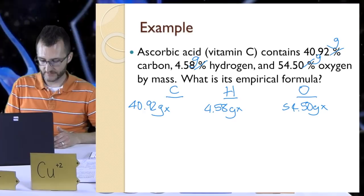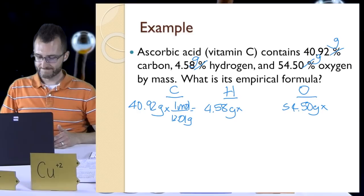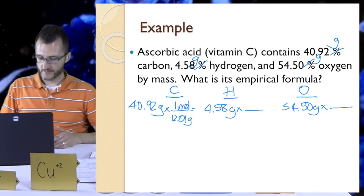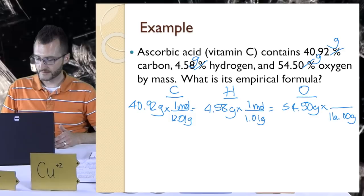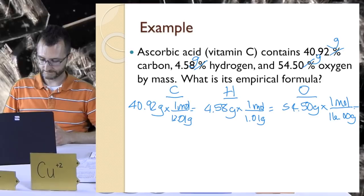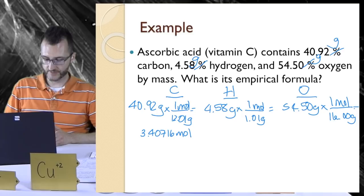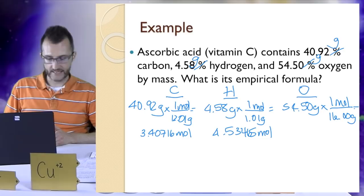We're going to convert to moles. We need a conversion factor for each one. Going grams to moles, I need the molar mass, and it's just for elements. So it's really just the atomic masses off the periodic table. Carbon is 12.01 grams, one mole goes on top. For hydrogen, this is in a compound, so it's not elemental hydrogen. We don't take into account diatomics. It's just the element, just the atomic mass, so 1.01 grams with one mole on top. Same thing with oxygen, it's just the atomic mass, 16 grams. If we do the math, I get 3.40716 moles of carbon, 4.53465 moles of hydrogen, and 3.40625 moles of oxygen.